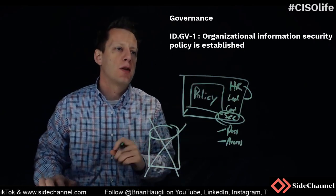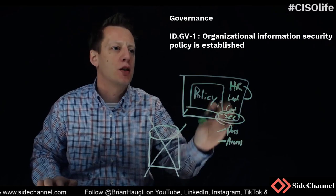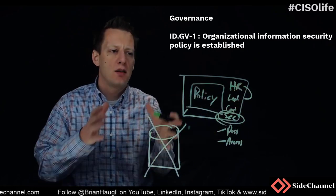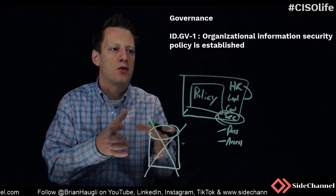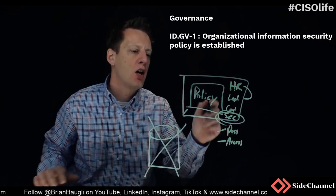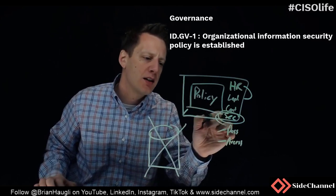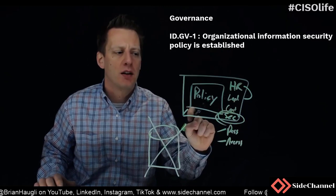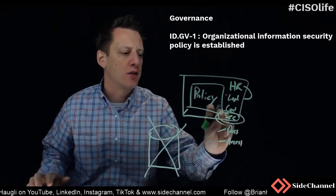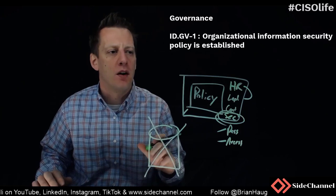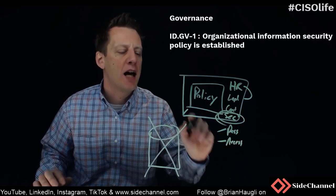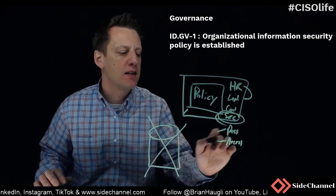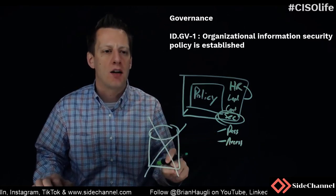Does the organizational information security policy exist? Is it established, understood, and governed? The policy defines the functions within the information security organization and provides references to supporting procedures and standards. The policy should not include everything you want to be doing — it should be high level, akin to the laws of the organization. What you want to follow, how you follow it, where you do that, and who does it needs to be defined in your procedures and other standards.